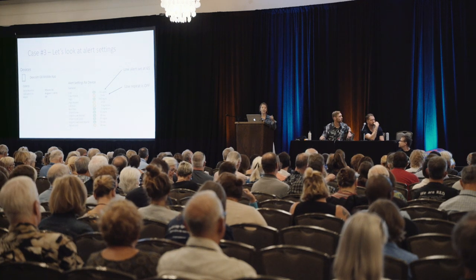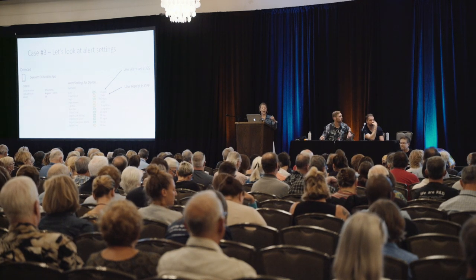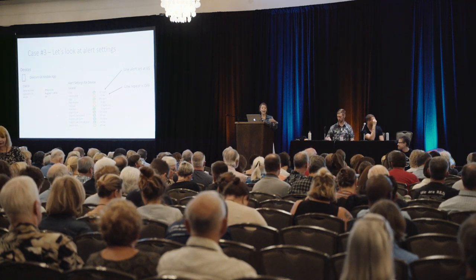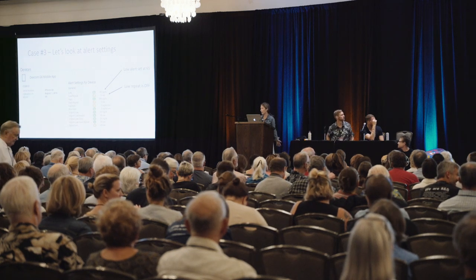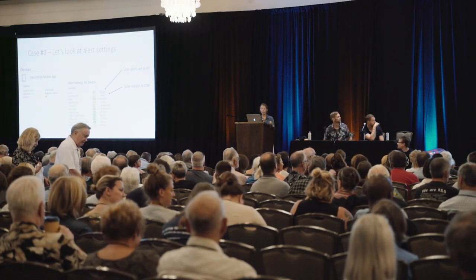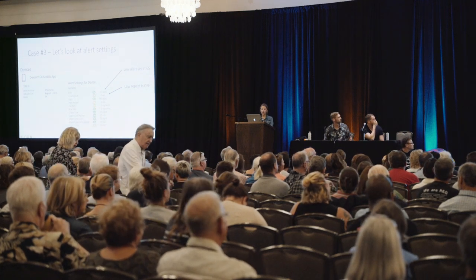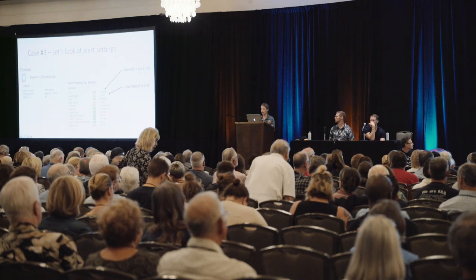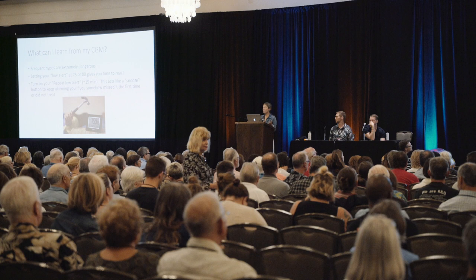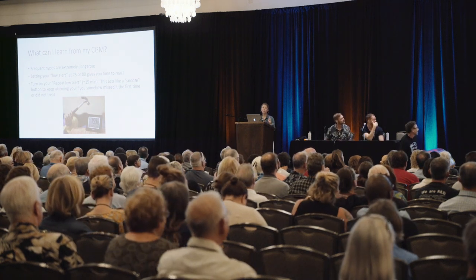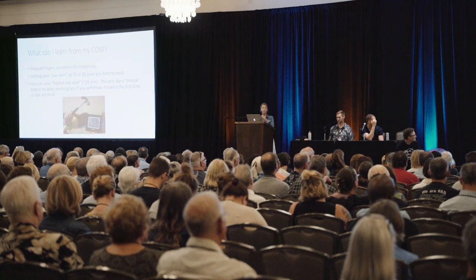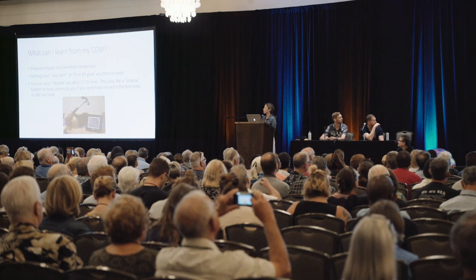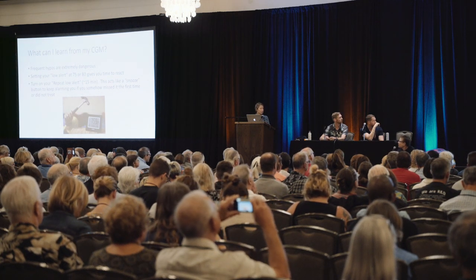I recommend setting your low alarm around 75 or 80. It's a safer place to be and gives you time to do something — you can eat a little pack of skittles and not have to eat the whole fridge because you're really feeling it. Also, this patient doesn't have their low repeat alarm on, and this is very dangerous. The repeat is like your snooze button. Some people sleep through their alarms, so you want to make sure that repeat is on — in case you don't respond to a low, it will go off again.